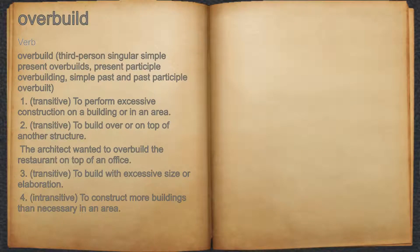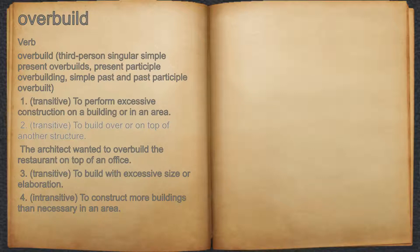Overbuild. 1. Transitive: To perform excessive construction on a building or in an area. 2. Transitive: To build over or on top of another structure.